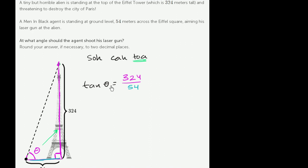Now you might say, what angle, when I take its tangent, gives me 324 over 54? For this, it will probably be useful to use a calculator. The way that we'd use a calculator is we would use the inverse tan function. So we could rewrite this as we're going to take the inverse tangent.